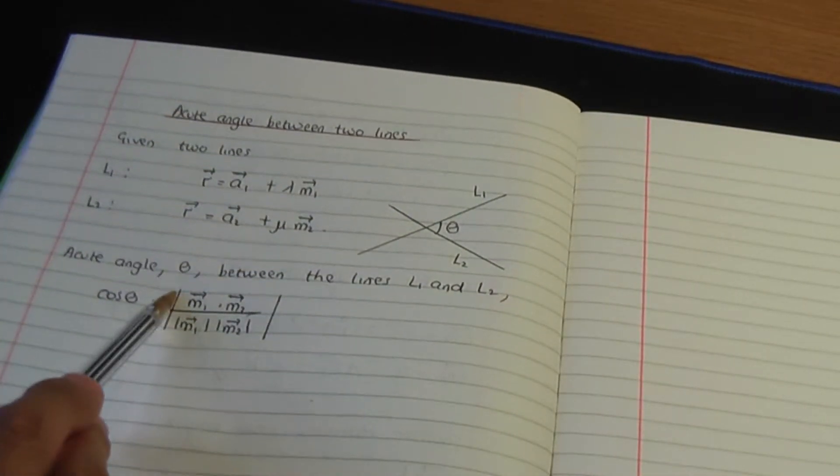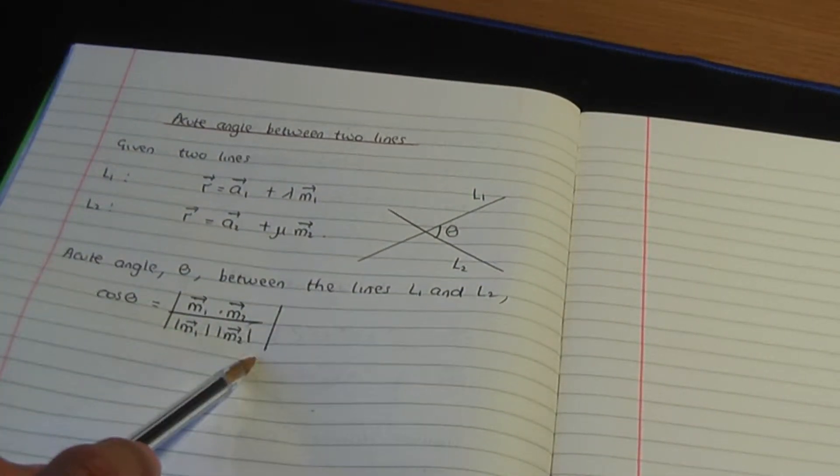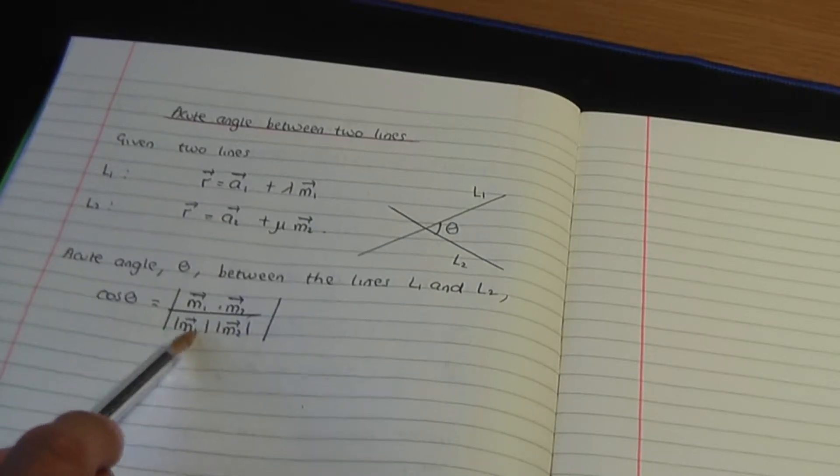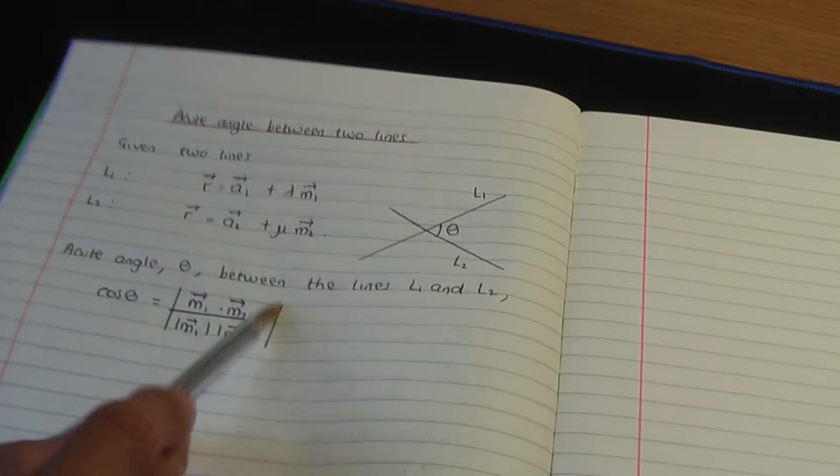So this line means absolute and these are modulus. So this is the moduli and this is absolute.